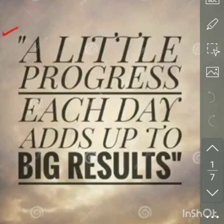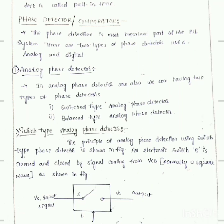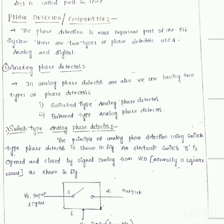Already in the previous video I discussed the topic phase lock loop. In a phase locked loop, the phase detector is the main component which is used to compare the input signal frequency with the signal coming from the feedback path. Today we are going to discuss the phase detector and the different types of phase detectors and how they work.